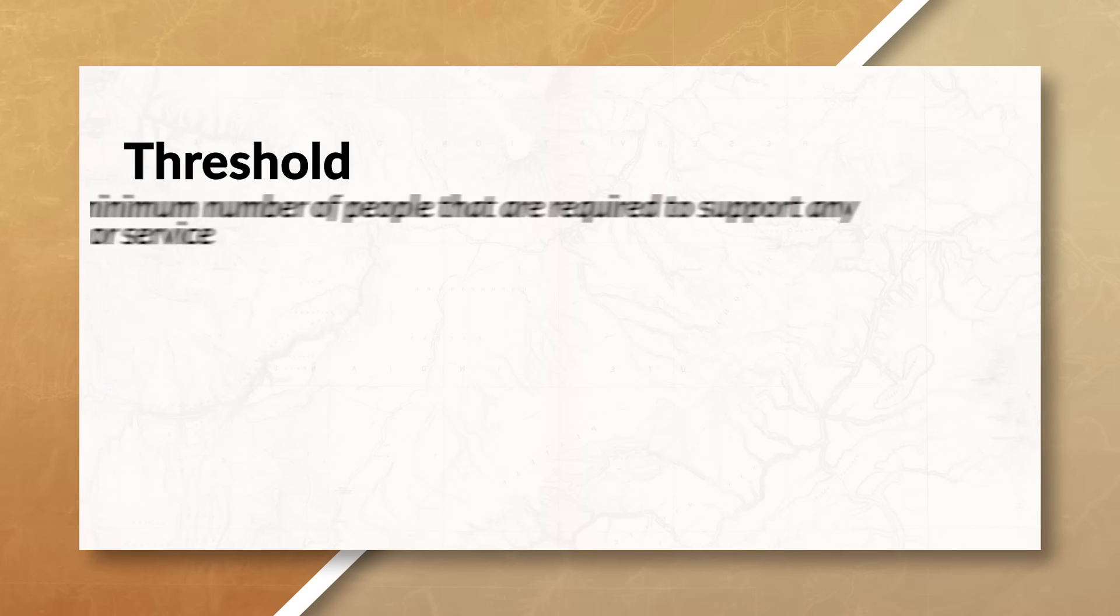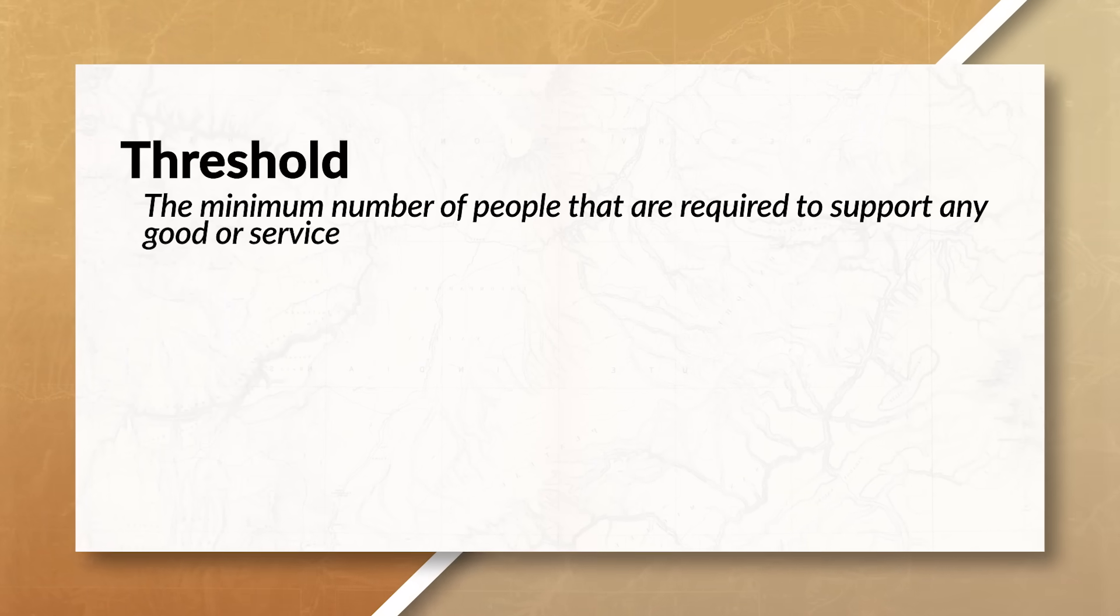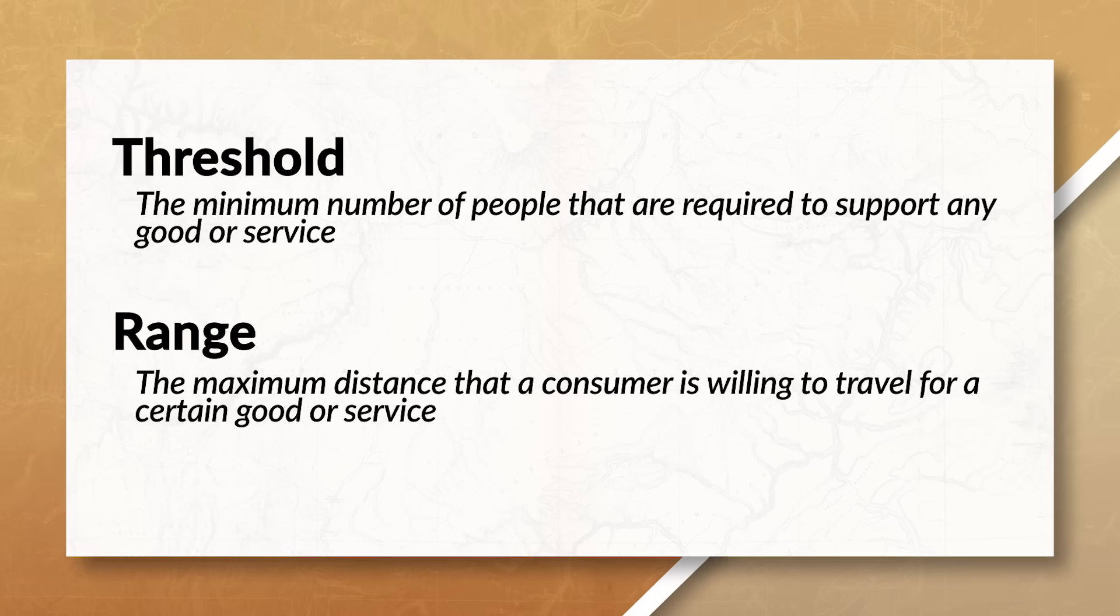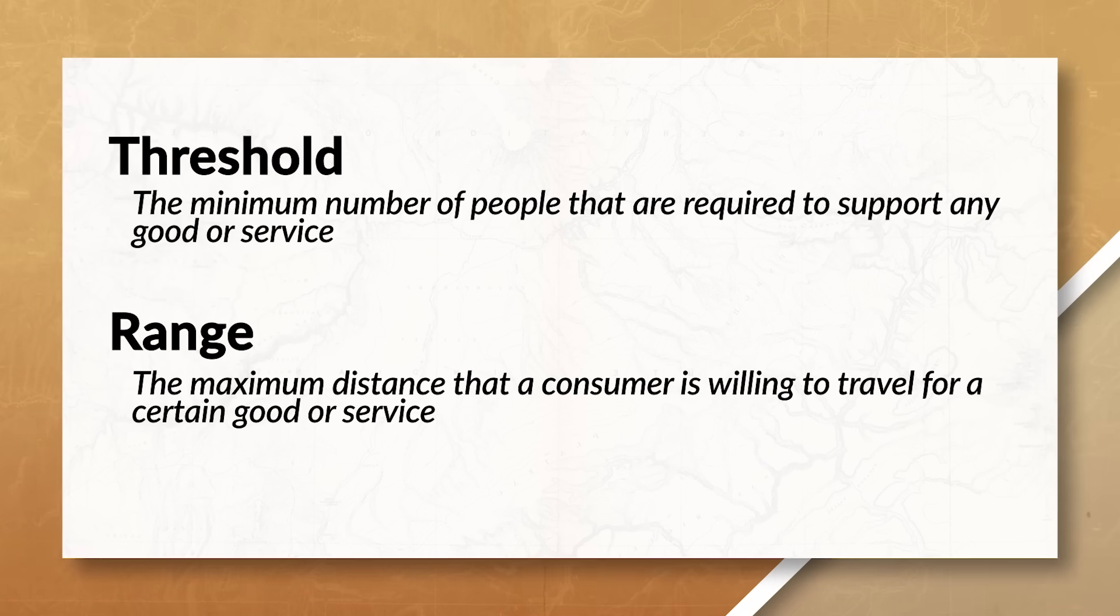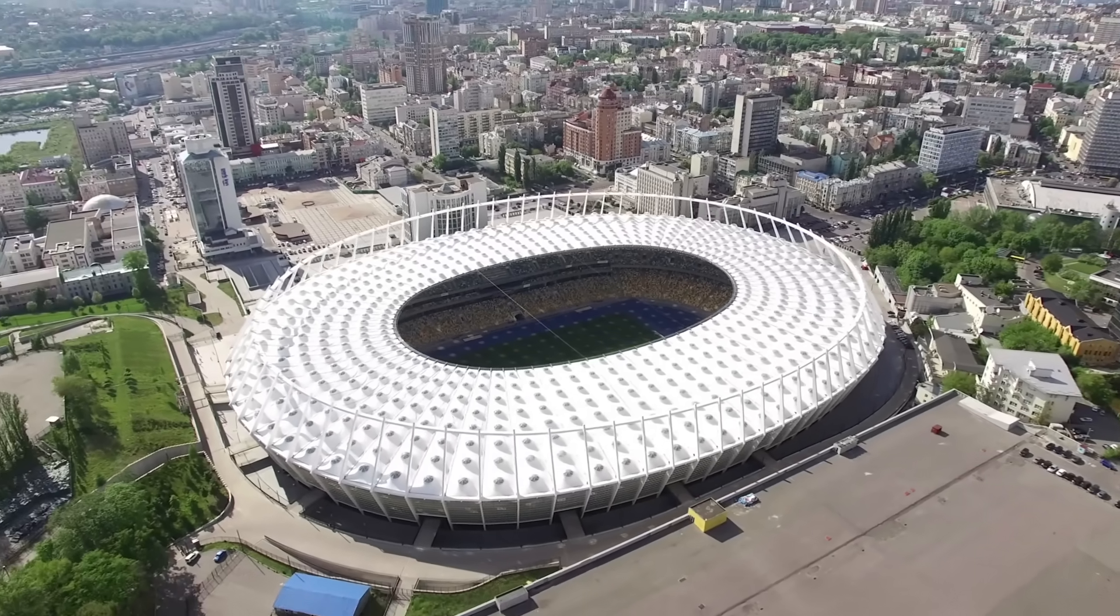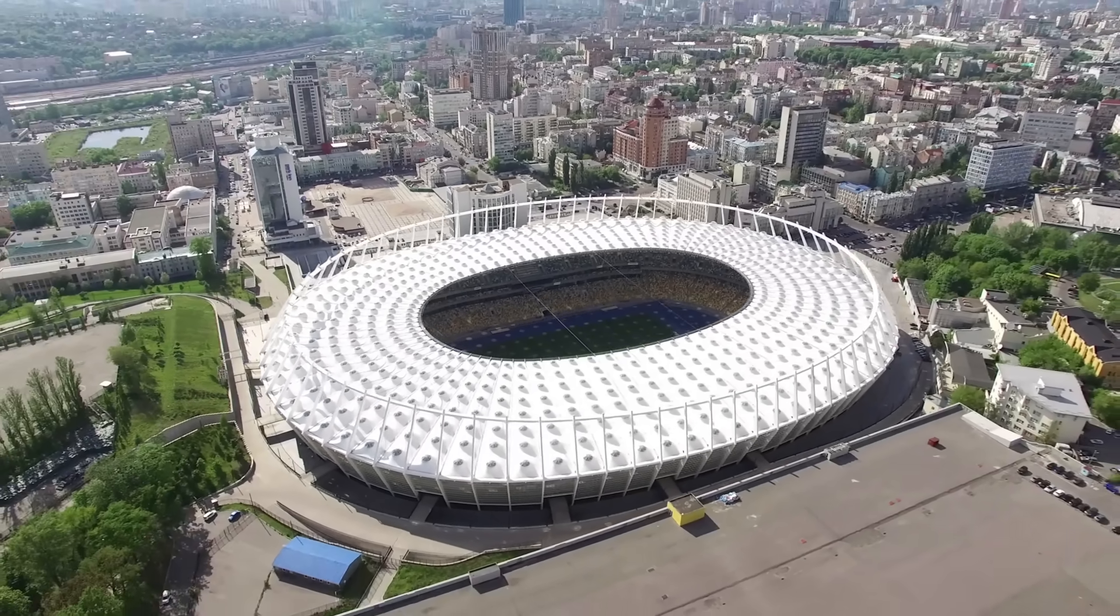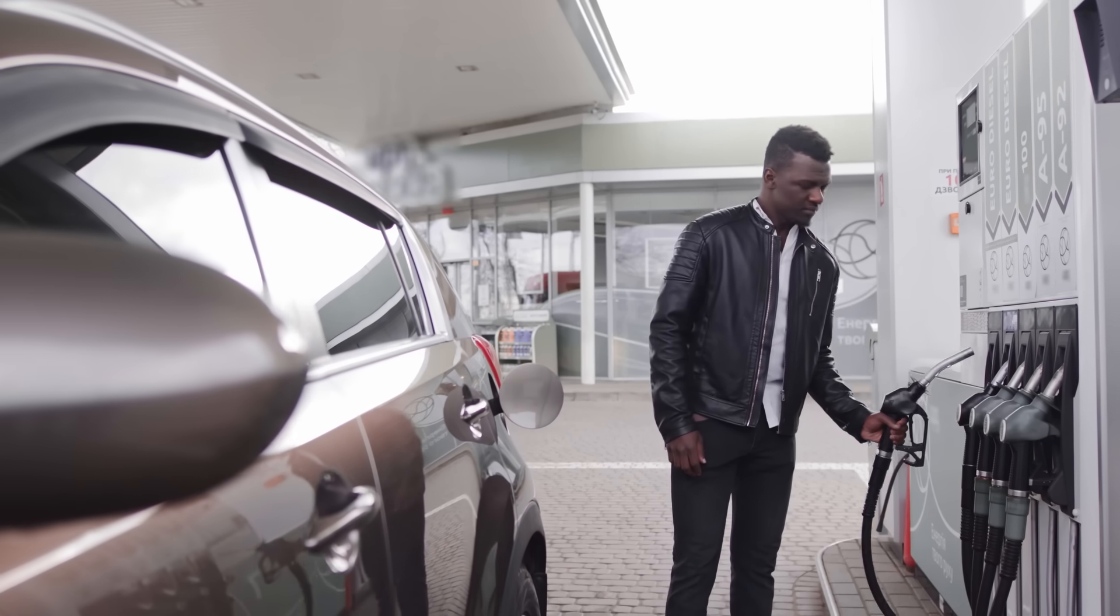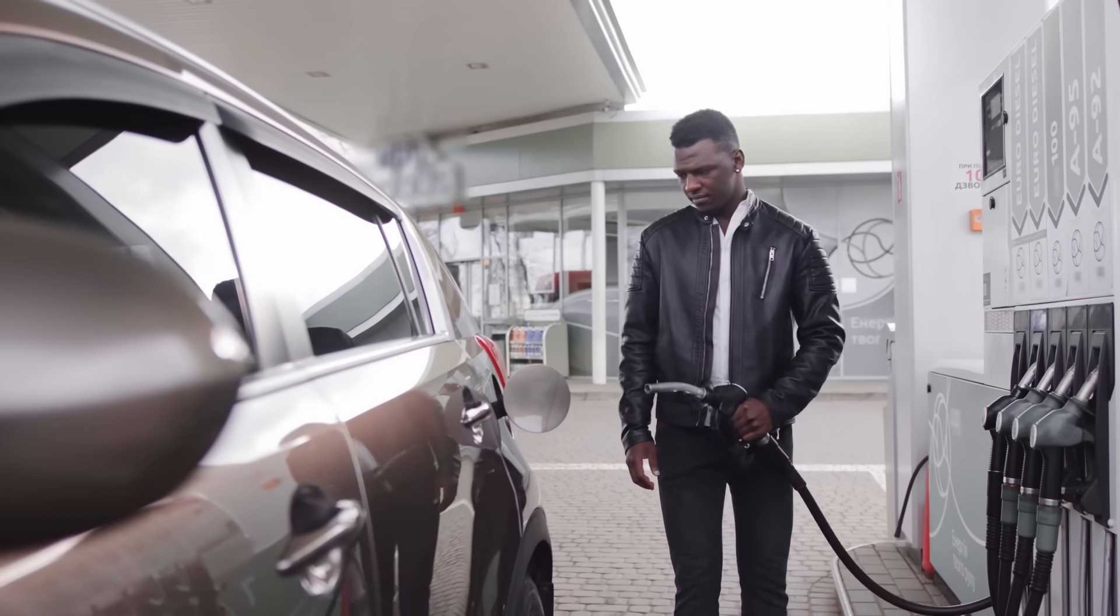Threshold is the minimum number of people that are required to support any good or service, while range on the other hand is the maximum distance that a person is willing to travel for a certain good or service. Traditionally the more unique, important, or specialized the good or service is, the larger the range will be, whereas goods and services that are more common, easy for others to replicate, or more general tend to have a smaller range.